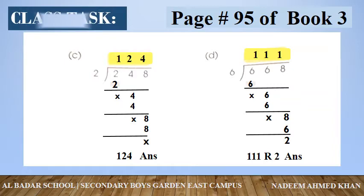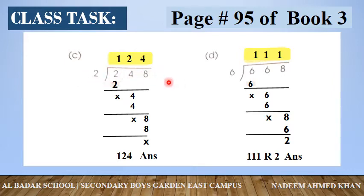Take out page number 95, book 3. اب divide کا سوال ہے — 248 کو 2 سے divide کرنا ہے۔ 2 کا table پڑھیے: 2 ones are 2 — یہاں 2 لگا دیجیے۔ 2 میں سے 2 subtract کریں — کچھ نہیں بچا۔ پھر 4 bring down کر دیا۔